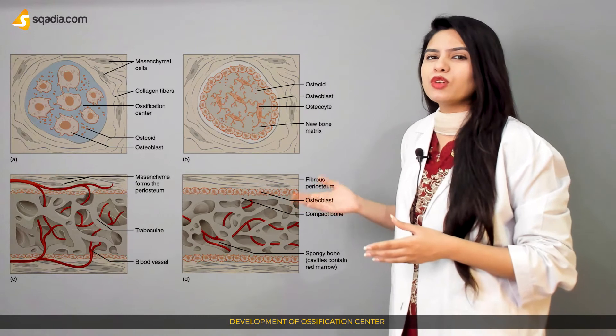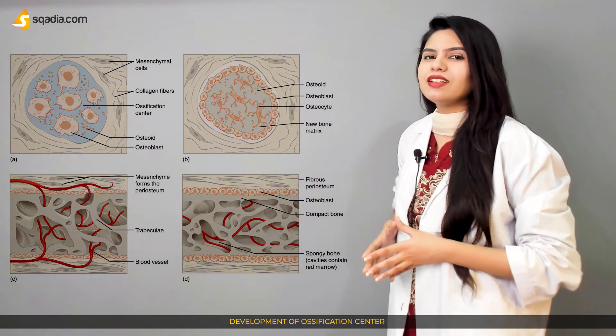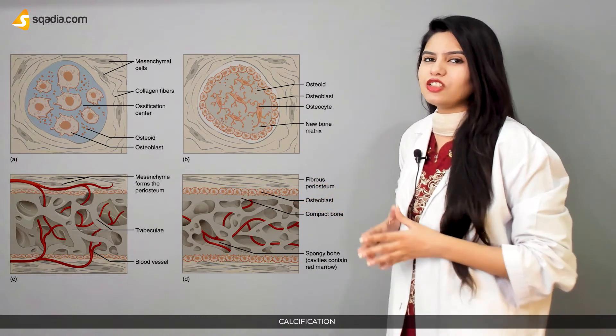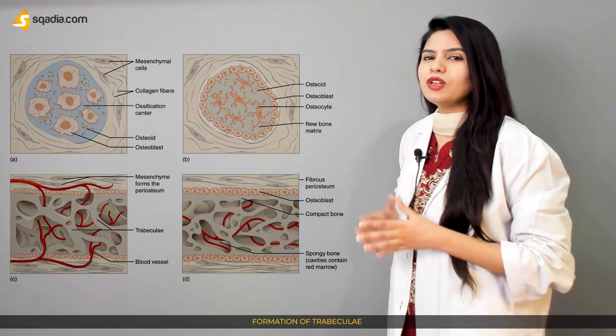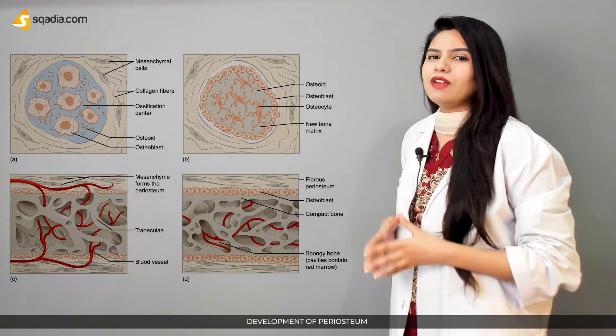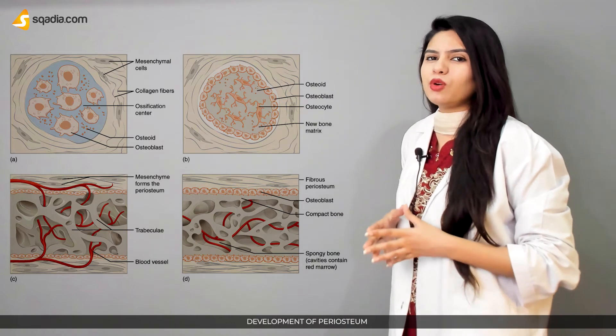The steps in intramembranous ossification are: the development of an ossification center, calcification, formation of trabeculae, and development of the periosteum.